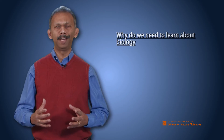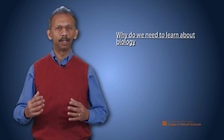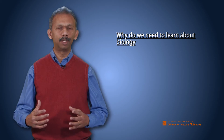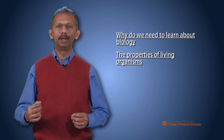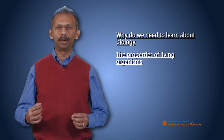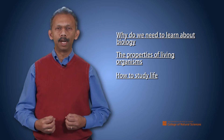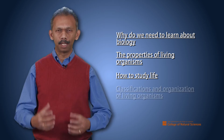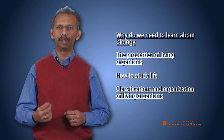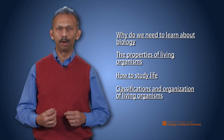This chapter is organized into four sections. The first part talks about why we need to learn biology. The second part covers the properties of living organisms. The third part discusses how to study life, and the last part is about the classification and organization of living organisms.